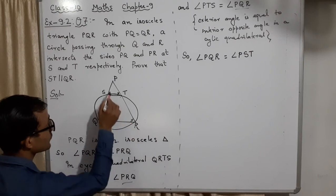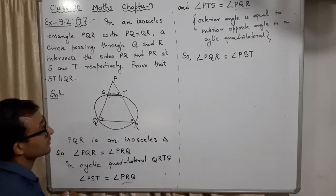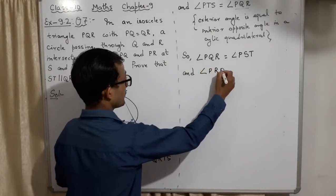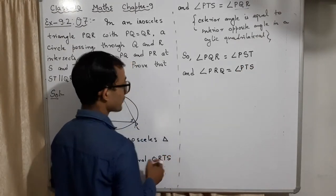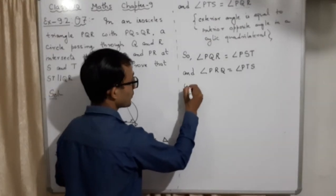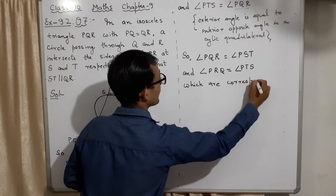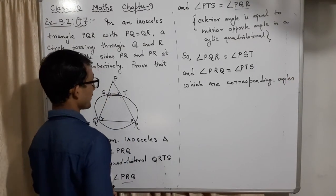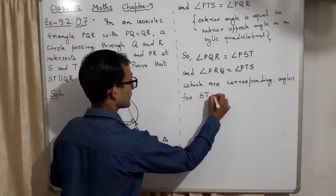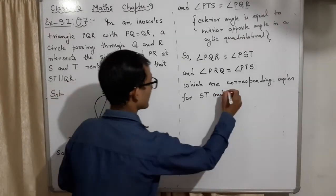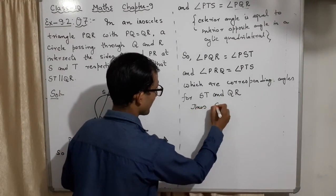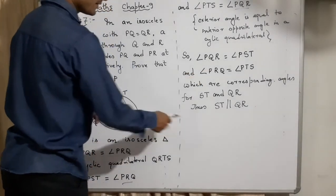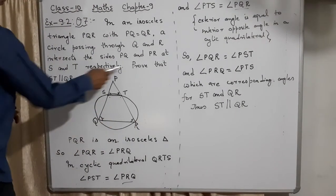So angle Q is equal to angle R, and angle R is also equal to angle S here — meaning Q and S are equal. Therefore, angle PRQ will be equal to angle PTS. These are corresponding angles for ST and QR. Thus, ST is parallel to QR — we proved it. They are corresponding angles, and corresponding angles are equal, which means these two lines ST and QR are parallel.